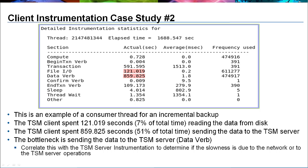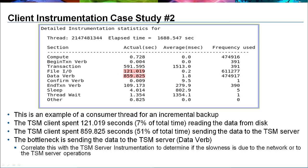The second case study is another example of an incremental backup. The Data Verb category is the largest in the consumer thread with 859 seconds out of a total of 1688 seconds — 51% of the total. This category accounts for time spent sending data to the TSM server. The File IO category, representing time spent reading data from the client disk, is only 7% of the total time, so file IO is not the bottleneck. The bottleneck is sending data to the TSM server, which could be a network problem or another bottleneck on the TSM server — use TSM server instrumentation for further investigation.